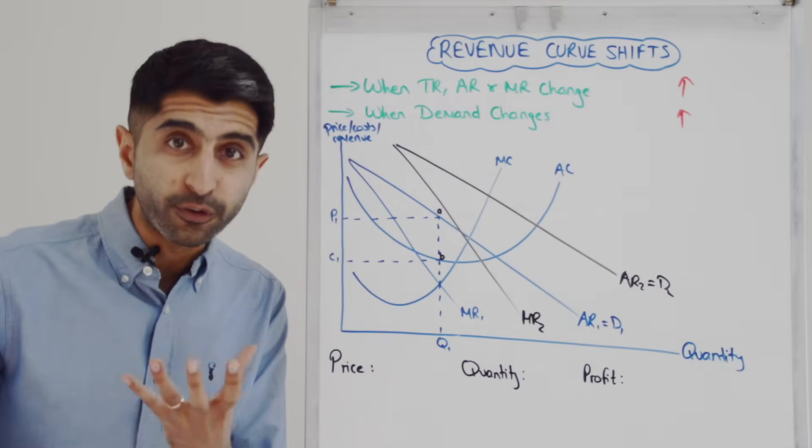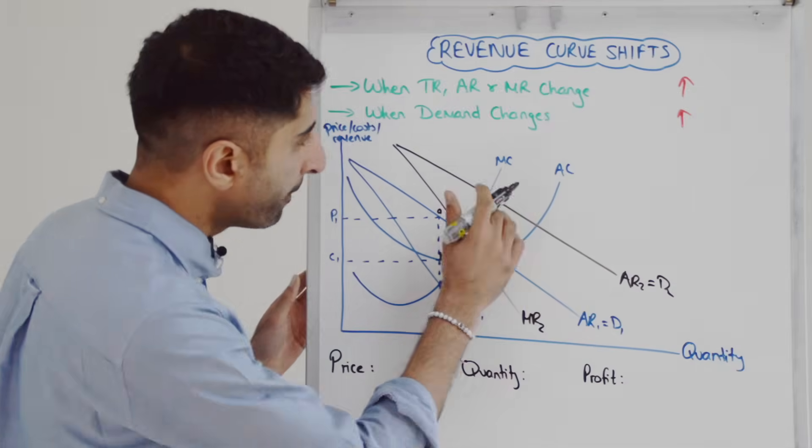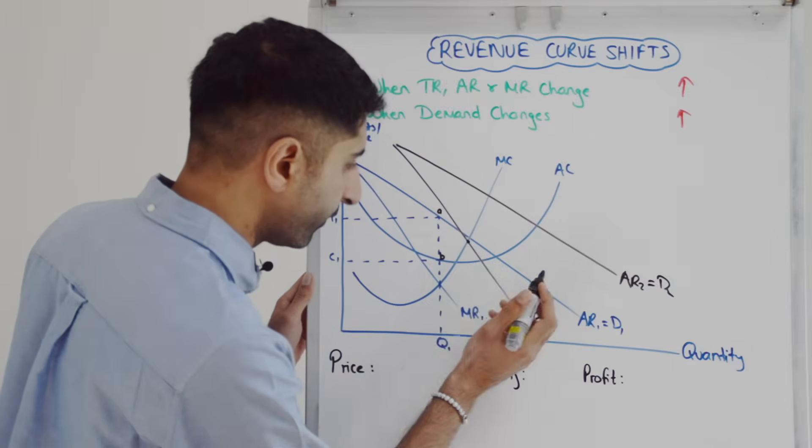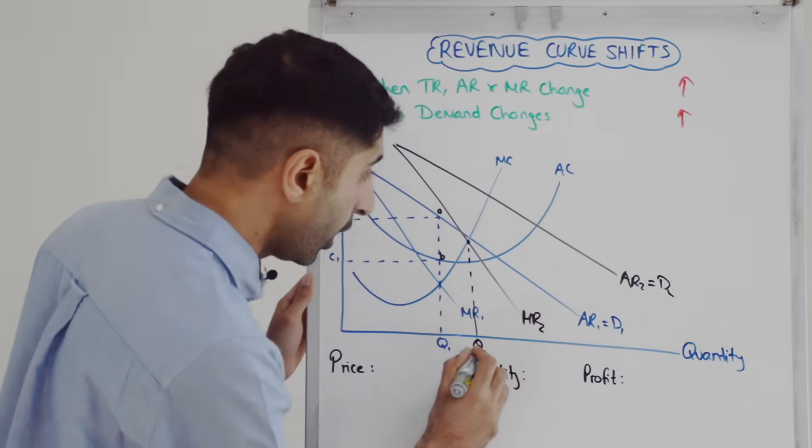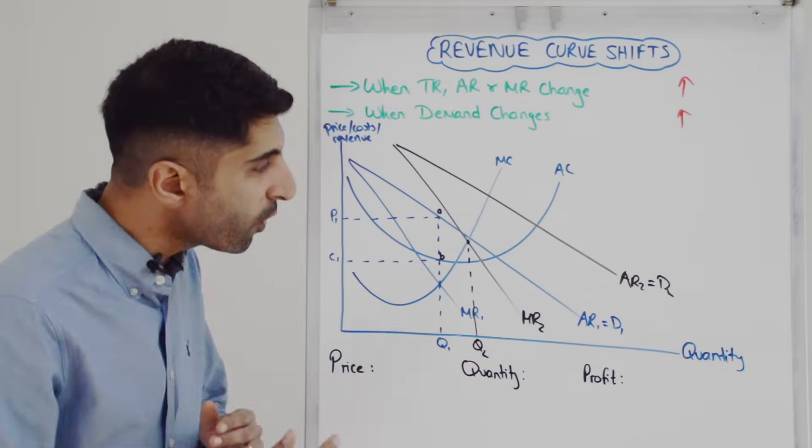A lot has changed here. So now there is a new profit max point where MR equals MC. That gives us a quantity. Let's call that quantity Q2.